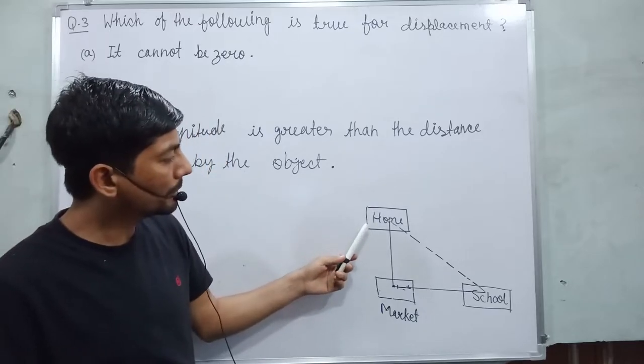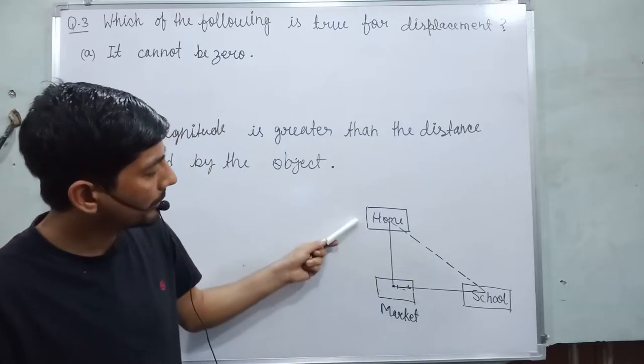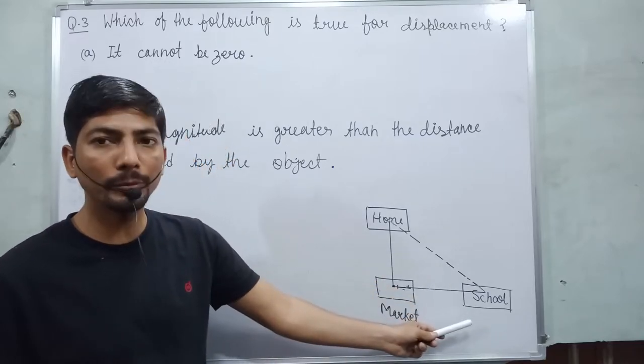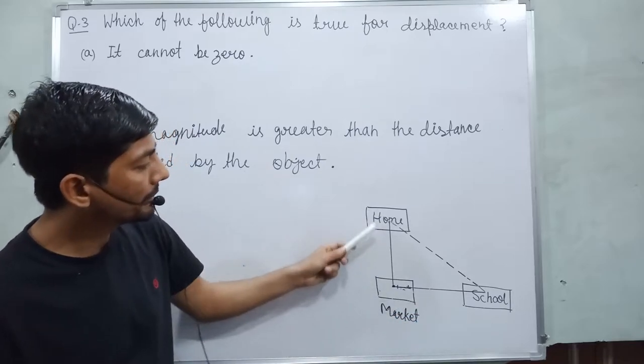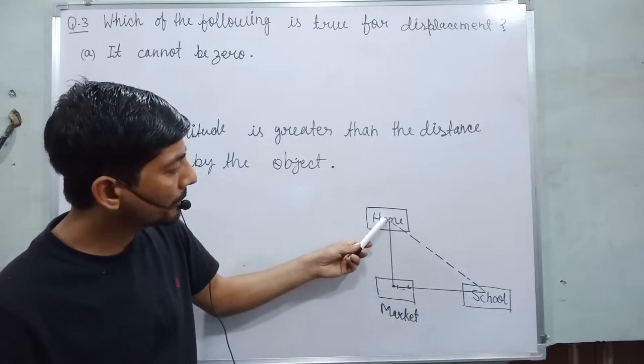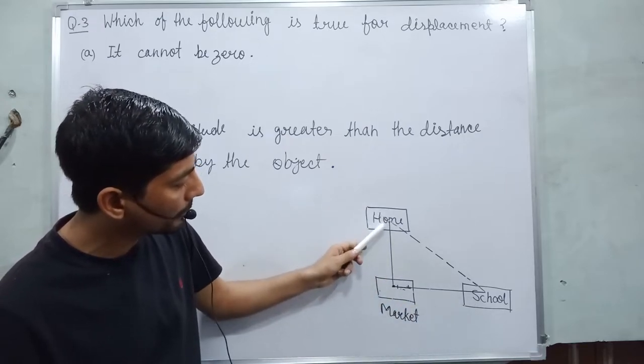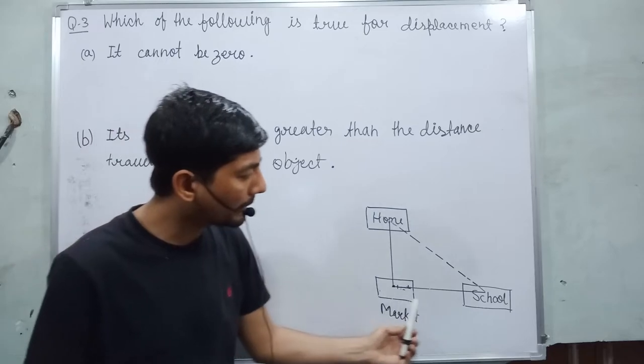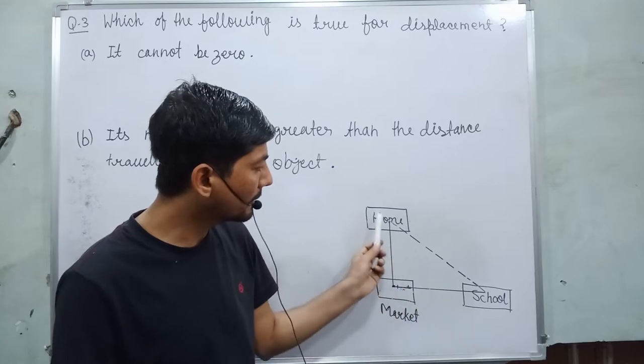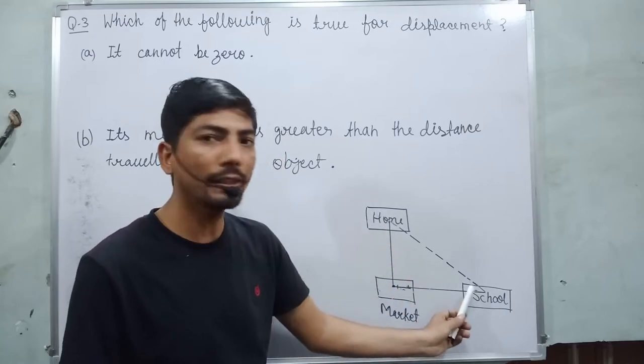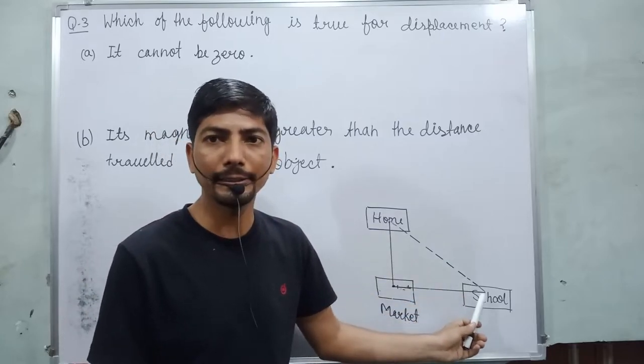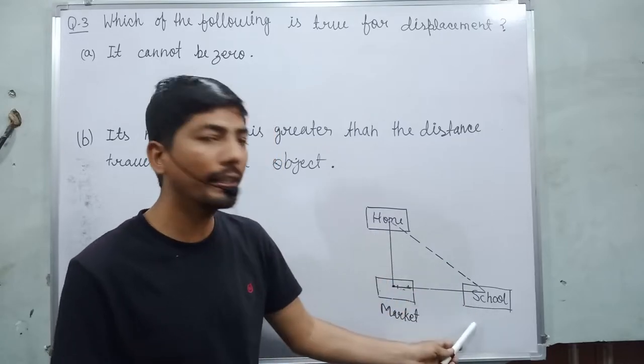For example, if you go to school, this is your home, market and school. Market is between school and home and the way to travel is a triangular shape. So first you go to the market from your home like this and after market to your school. If you travel this distance, it is longer distance as comparison to shorter distance. This dot lines represent a shorter or straight line distance between your home and school.